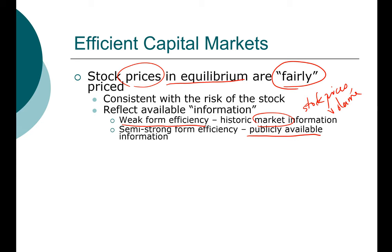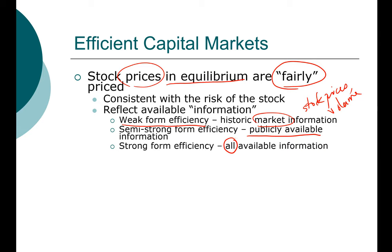The last form is strong form efficiency, which includes all available information — public and private, proprietary information. If market prices reflect all information, we conclude that the stock market exhibits strong form efficiency.